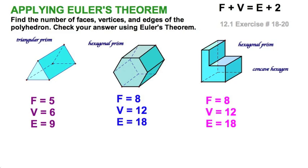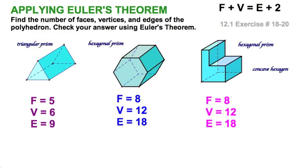Exercises 18 through 20 are all prisms. A prism has a base shape — in this case a triangle — projected into a depth, or extruded, with rectangular sides. For the triangular prism: one, two, three rectangular sides and two triangular bases give five faces. Vertices are three here and three projected back, giving six. Edges: three here, three there, and three connecting the vertices, for a total of nine edges, again obeying Euler's theorem.